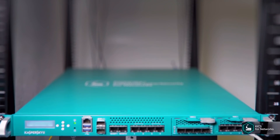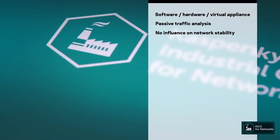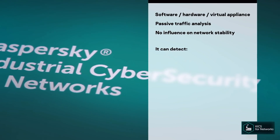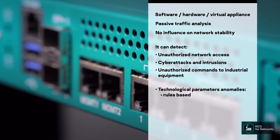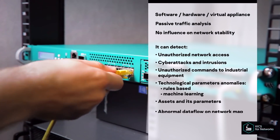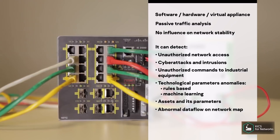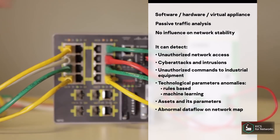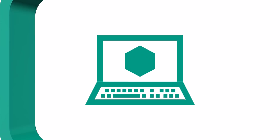KICS for Networks is a virtual, software or hardware appliance passively connected to the industrial Ethernet network. It does not influence network stability or reduce its performance. It can detect unauthorized network devices and communications, cyber-attacks and abnormal behavior in industrial network traffic. It can even detect anomalies in commands and technological parameters with deep packet inspection technology.